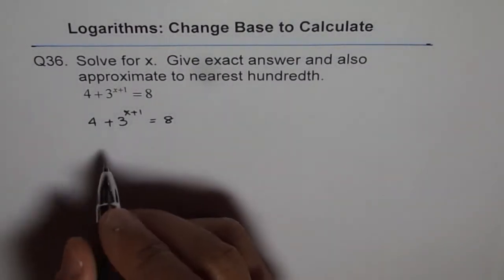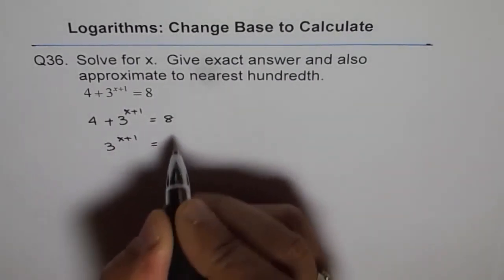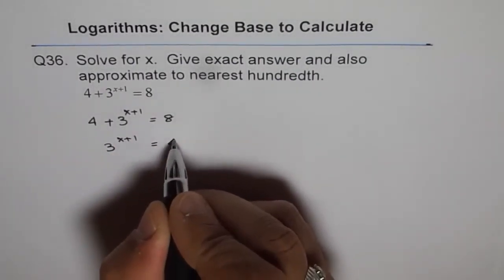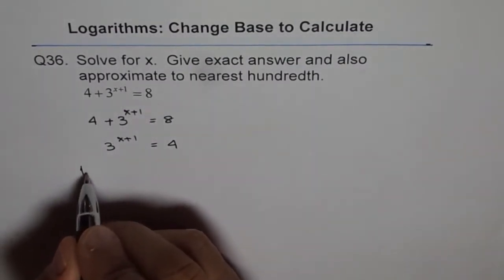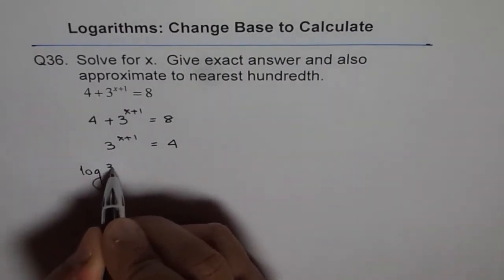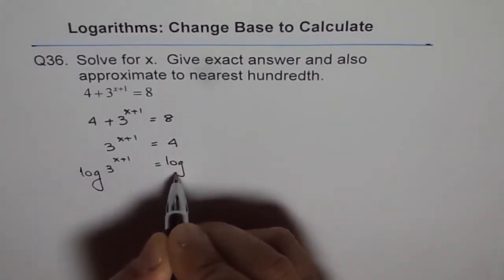We have 4 plus 3 to the power of x plus 1 equals to 8. So let's take the constants on the right side. So we get 3 to the power of x plus 1 equals to 8 minus 4 which is 4. And now we can take log on both sides.